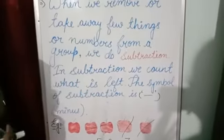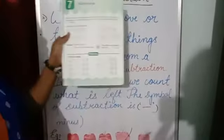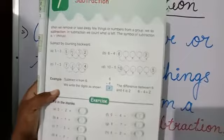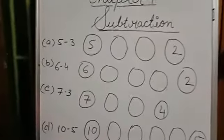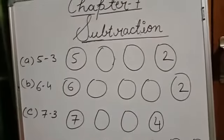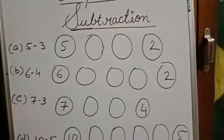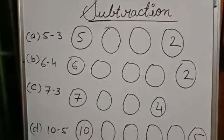I hope you would have understood. Now let's do the exercise on page number 57. All of you take out your maths book and do the exercise with me. The first exercise is subtract by counting backward.